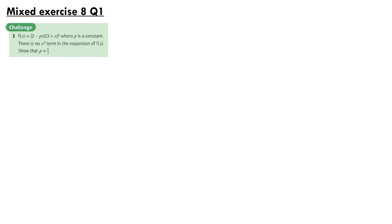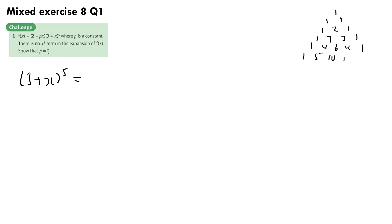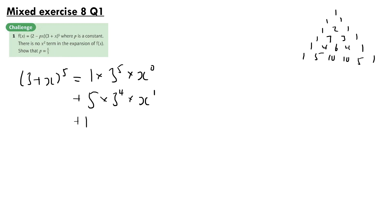And finally, our Mixed Exercise 8 questions. Question 1: f(x) = (2 - px)(3 + x)⁵, where p is a constant. There is no x² term in the expansion of f(x); show that p equals 4/3. First, expanding (3 + x)⁵ using Pascal's triangle with coefficients 1, 5, 10, 10, 5, 1, we only need up to x²: we get 243 plus 405x plus 270x² and so on.